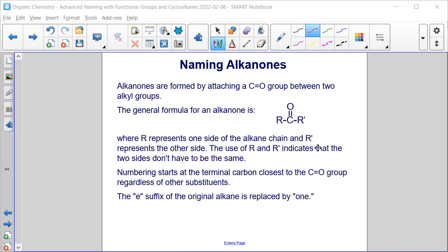Numbering starts at the end closest to the double bond. So like if there's three carbons on this side and four carbons on the left side, we would start our numbering at the right.